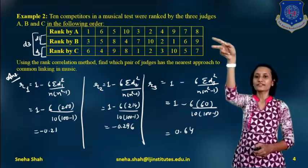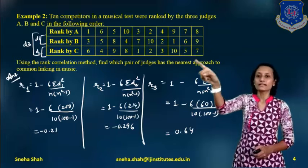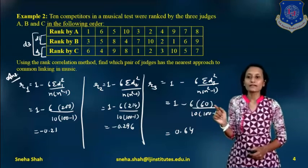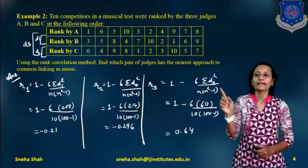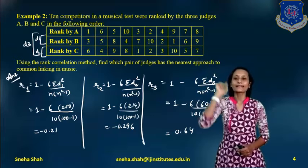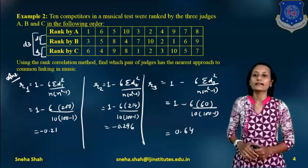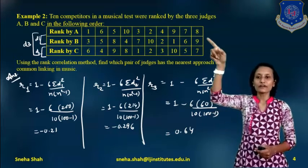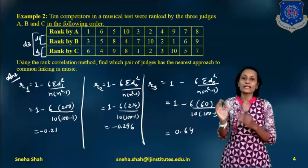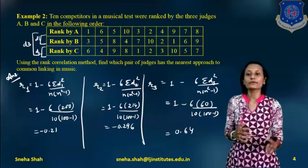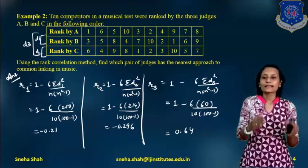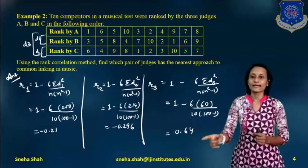First, we find the difference between ranks given by A and B, denoted D1. R1 equals 1 minus 6 sigma D1-squared divided by n into n-squared minus 1, where n equals 10. D1 is the difference of rank by A and rank by B: 1 minus 3 equals minus 2; 6 minus 5 equals 1, and so on. After squaring and summing, we find R1 equals minus 0.21.